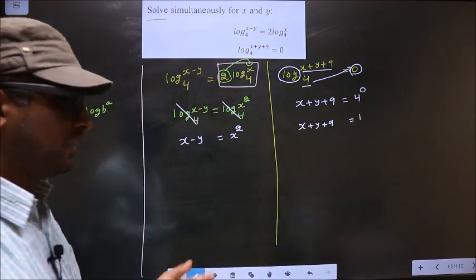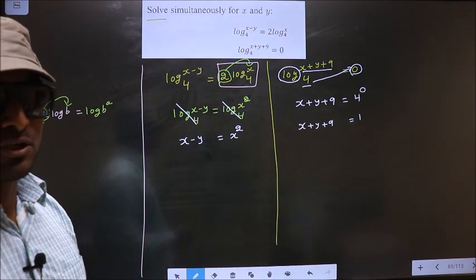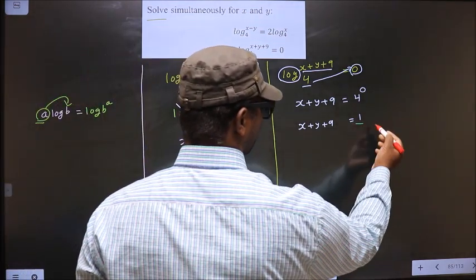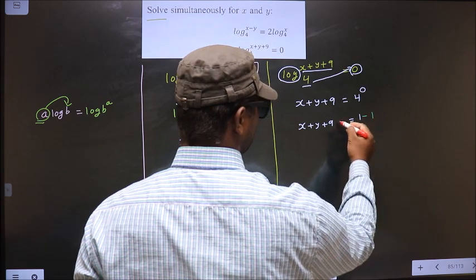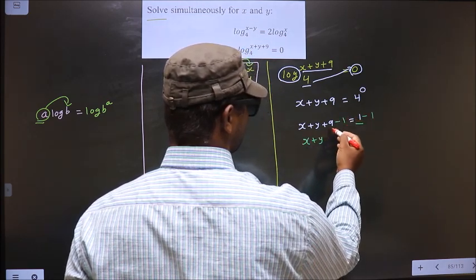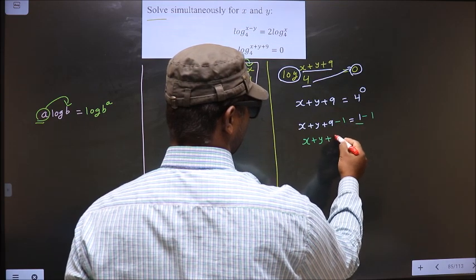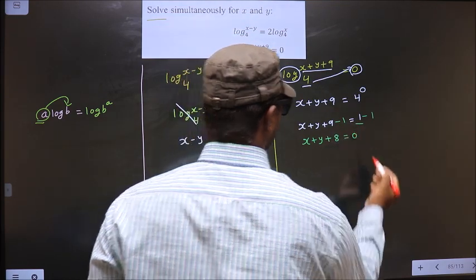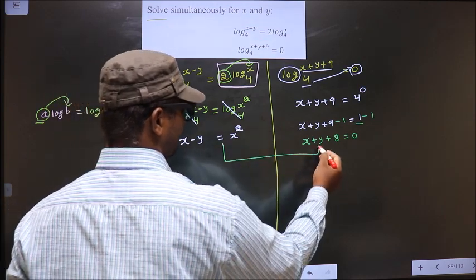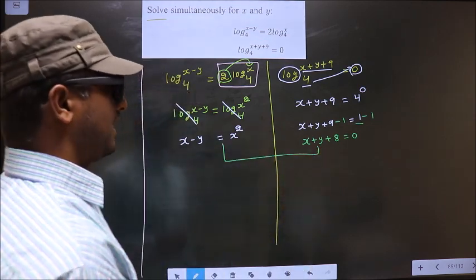Now take all terms to one side. Remove the 1 by subtracting it from both sides: x + y + 9 - 1 = 0, which gives x + y + 8 = 0. Now we solve these two equations to get x and y.